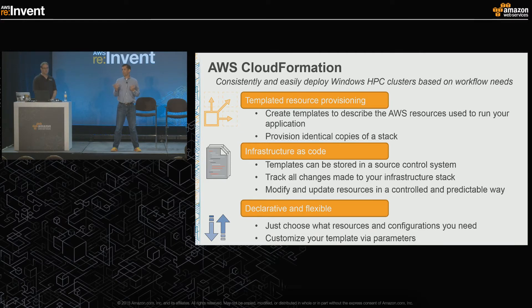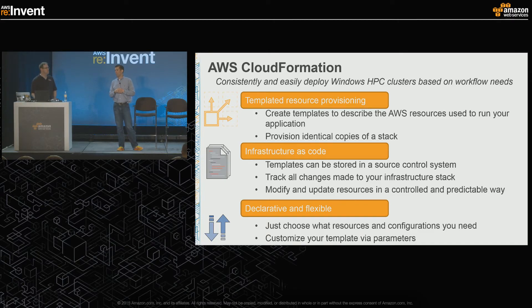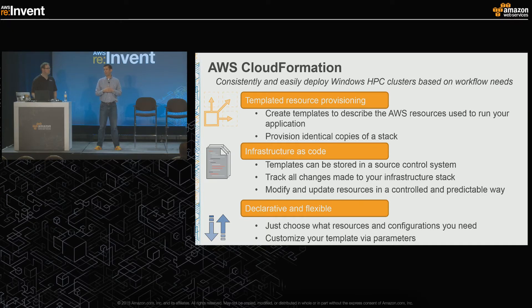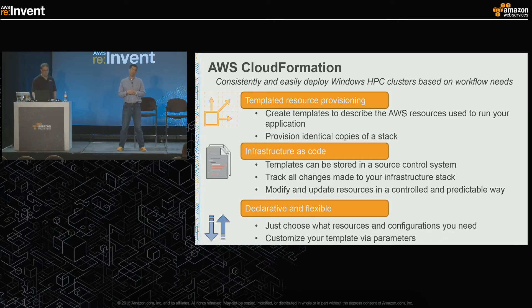Lastly, orchestration - how do I make this easier? We've talked about monitoring, auto scaling, and EC2 compute. How do I create a parallel cluster over and over again consistently? CloudFormation is the service that allows you to do that. It turns your infrastructure into code - I can define what my Windows HPC application looks like and consistently launch that same Windows HPC cluster repeatedly, and it will be identical every single time.